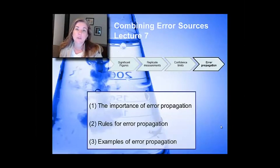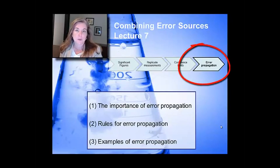This is lecture 7 in a series that we're doing at the beginning of the class on error and measurement. We've covered everything from significant figures through basic replicant measurements to using confidence limits. And today, what we're going to be talking about is combining different sources of error.